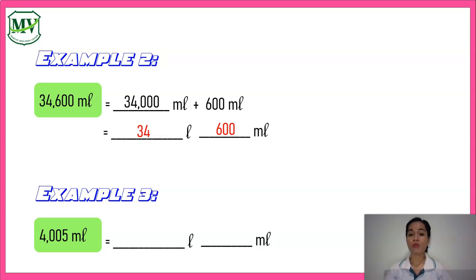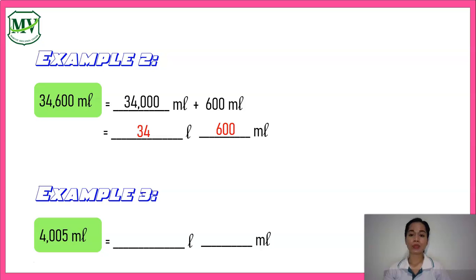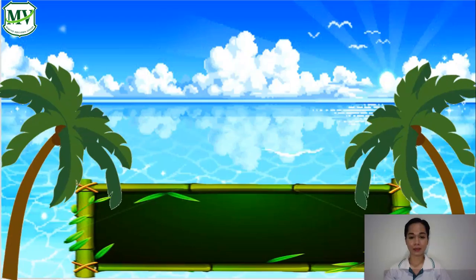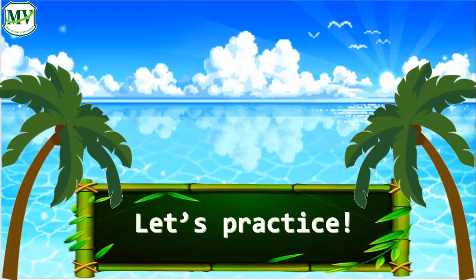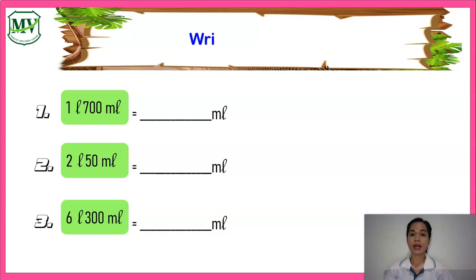Let's take a look at the next example. We can rewrite four thousand five milliliters as four thousand milliliters plus five milliliters. Since four thousand milliliters is equal to four liters, we can say that four thousand five milliliters is equal to four liters and five milliliters. Get ready — let's practice! Now let's convert the following volumes into milliliters.